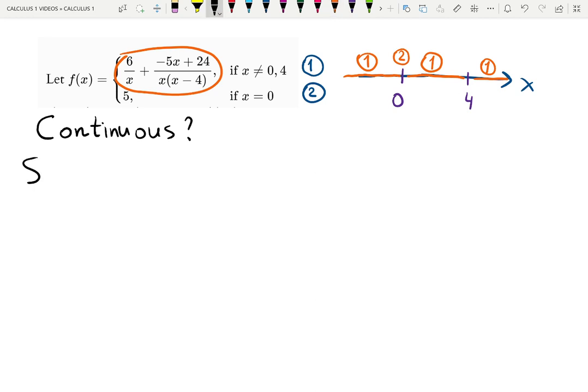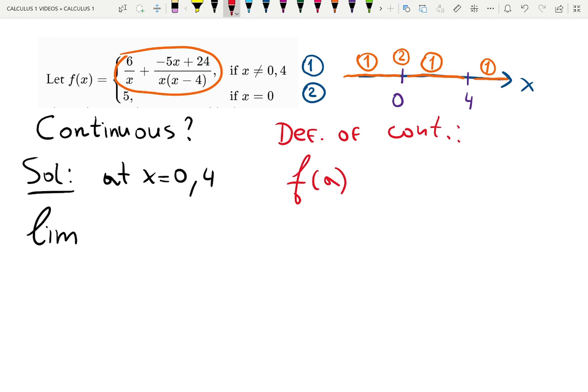So I want to check continuity at x equals zero and four. Is it continuous or not? To do that, I need to figure out if the limit exists at zero and at four, and then if that limit matches with f at zero and f at four. So definition of continuity, if you don't remember, is f at the point a, which is x equals zero or x equals four, must match with the limit at that point when x approaches a.